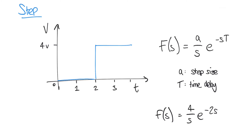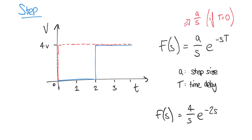One other thing worth noting: if we return to the original expression for the step input, if that step input occurs immediately — i.e., at time equals zero — we can simplify this expression a lot. If the step input is immediate, then t equals zero, which means e is raised to the power of minus zero. And e to the power of zero is one, so this whole exponential term cancels down to one. We're left with simply a over s. So a step input at time zero can simply be given as a over s in that simplified form.